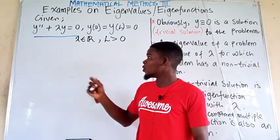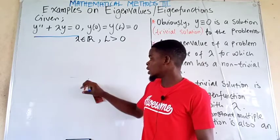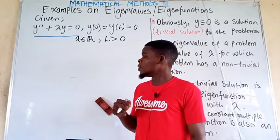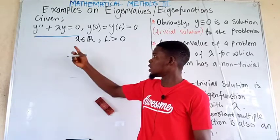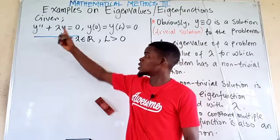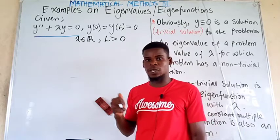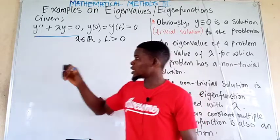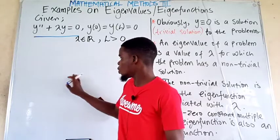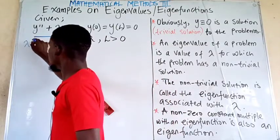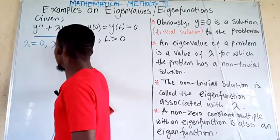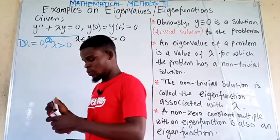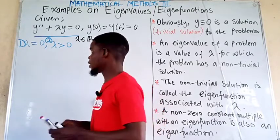Since lambda is a real number, we consider it as negative, zero, or positive. Lambda being a negative number will not satisfy this problem — it will not give us a non-trivial solution, so a negative lambda is not an eigenvalue. I want to consider two cases only: when lambda equals zero, and when lambda is greater than zero.